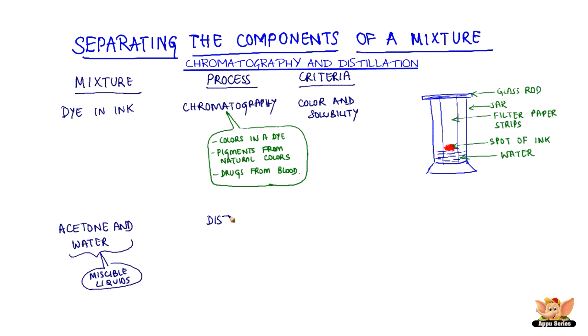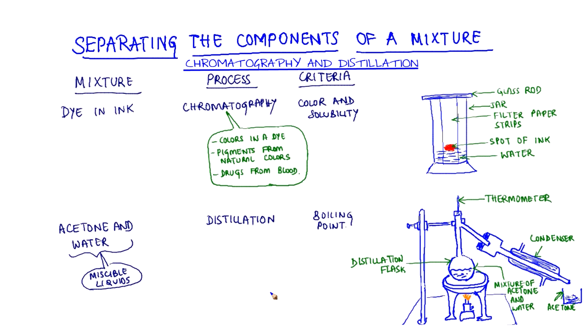We use a process called distillation to separate miscible liquids. Distillation is a method for separating components of a mixture containing two miscible liquids that boil without decomposition and have sufficient difference in their boiling points. Here, acetone has a boiling point of 56°C, which is much less than the boiling point of water, which is 100°C.